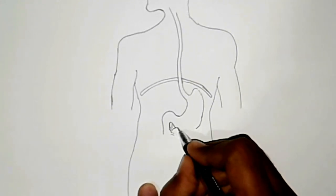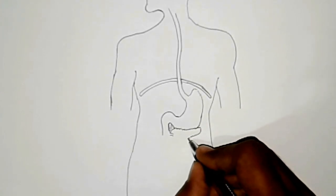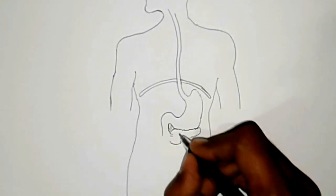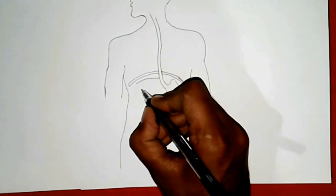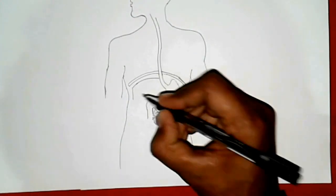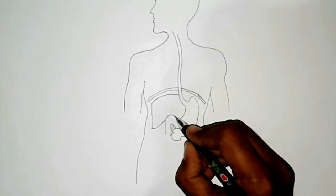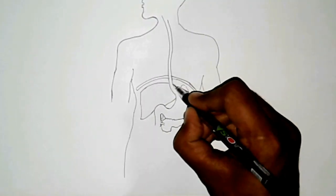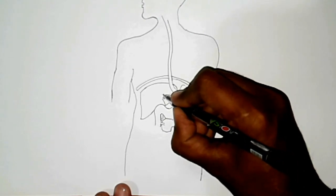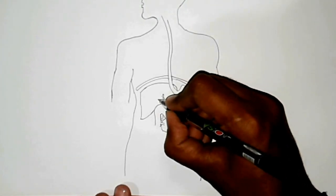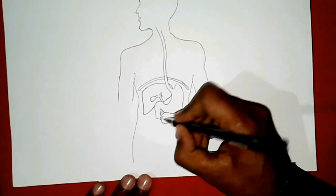And here I will draw a pancreas. After that, here I will draw the biggest gland of the body, that is liver. Beside the liver, I will draw gallbladder. Gallbladder stores bile which is very important thing for digestion of fatty foods.